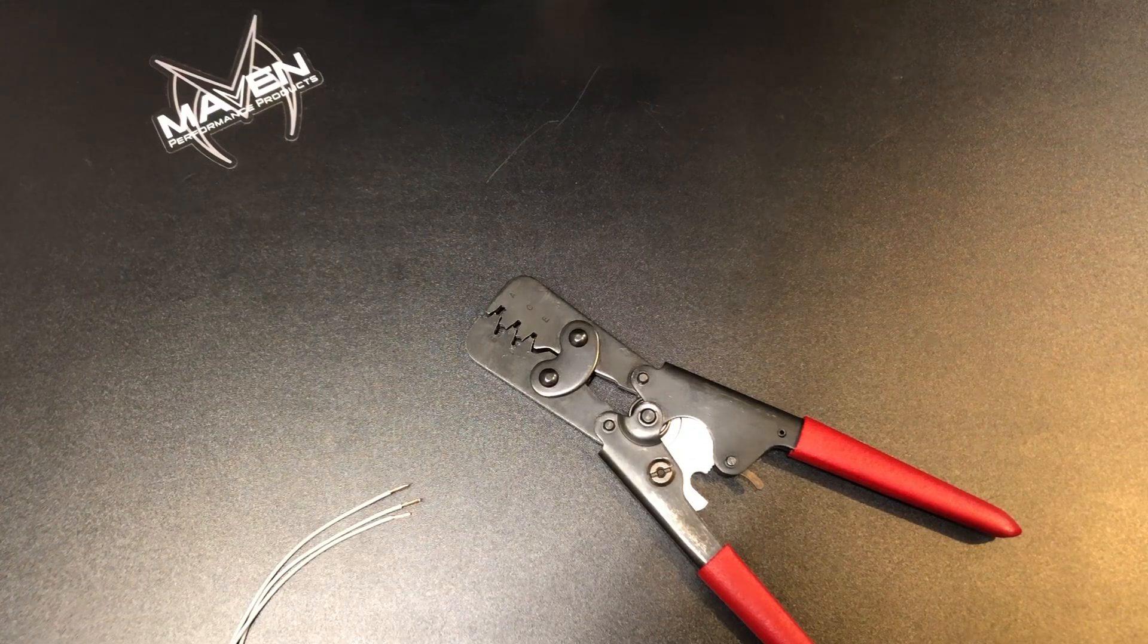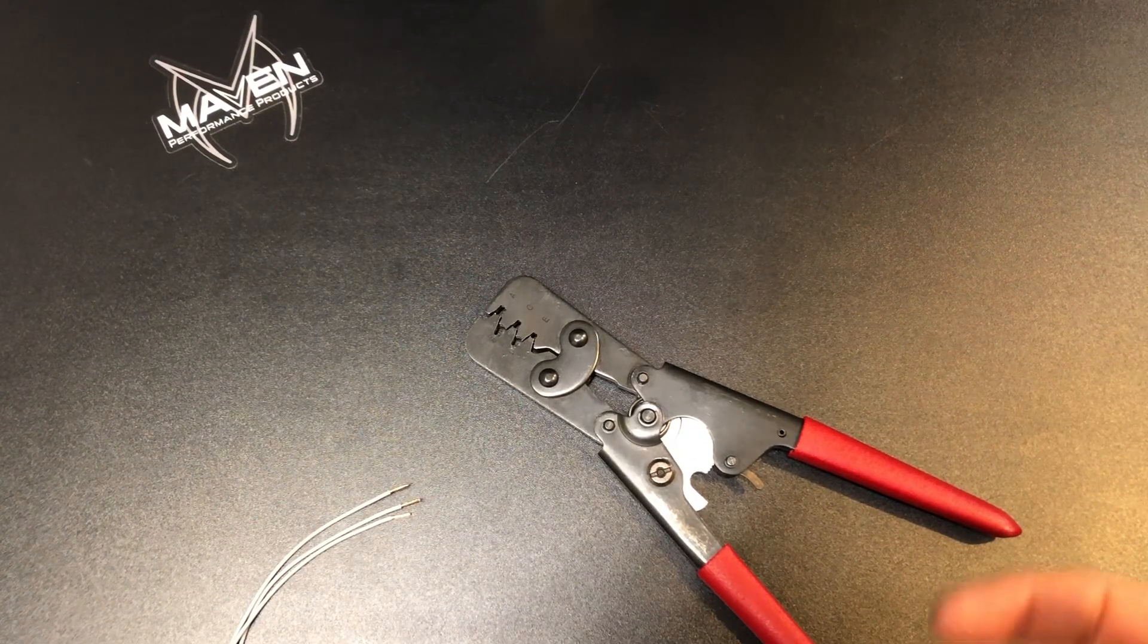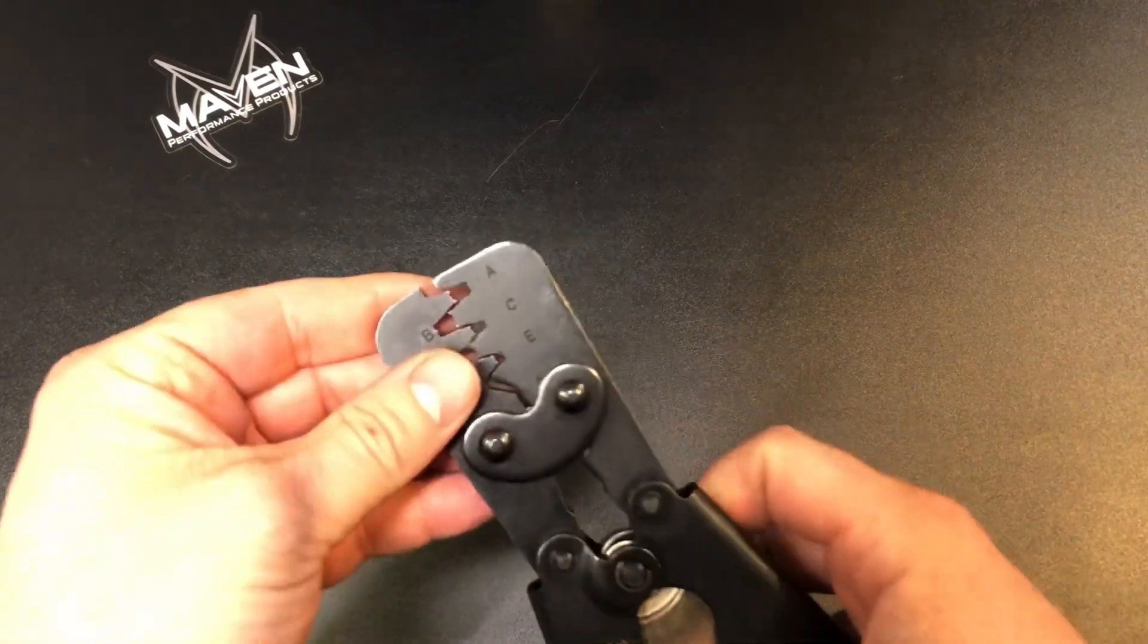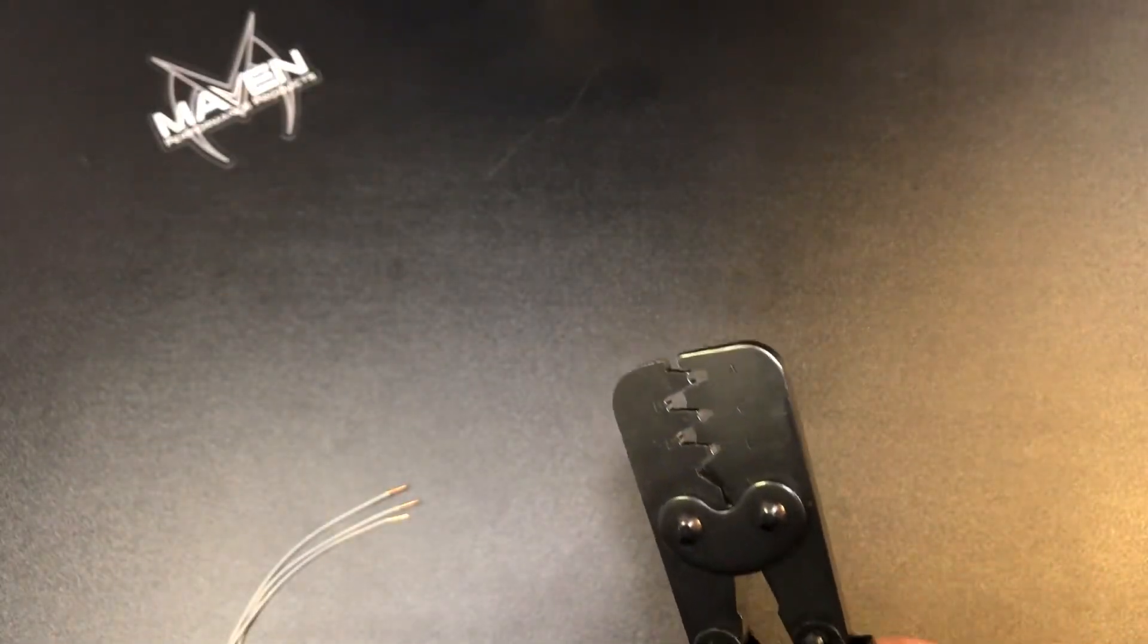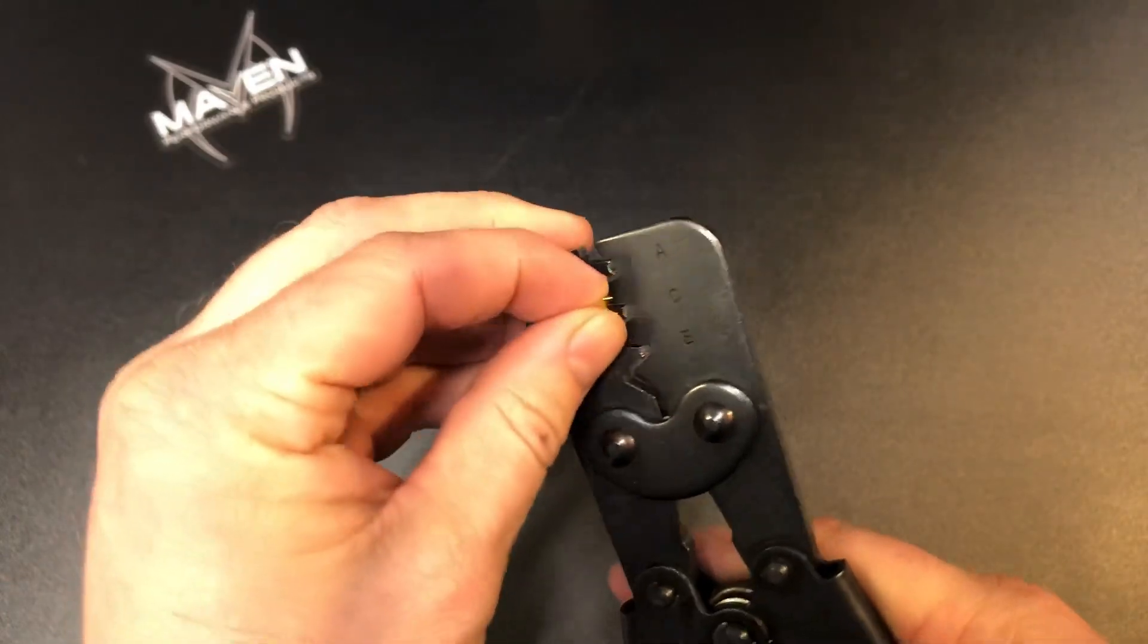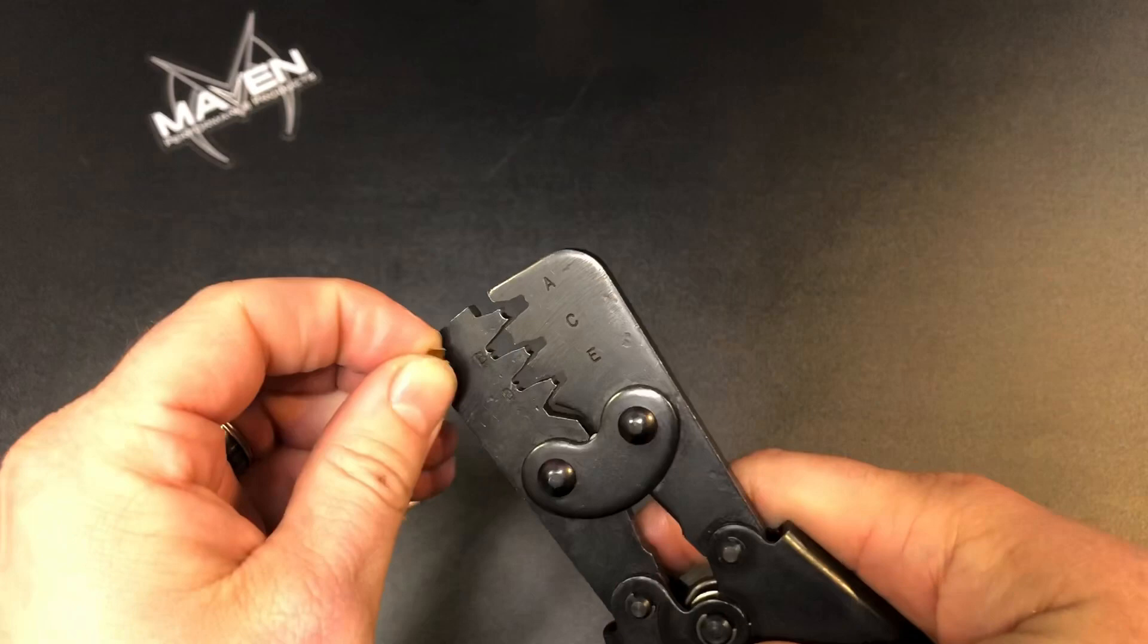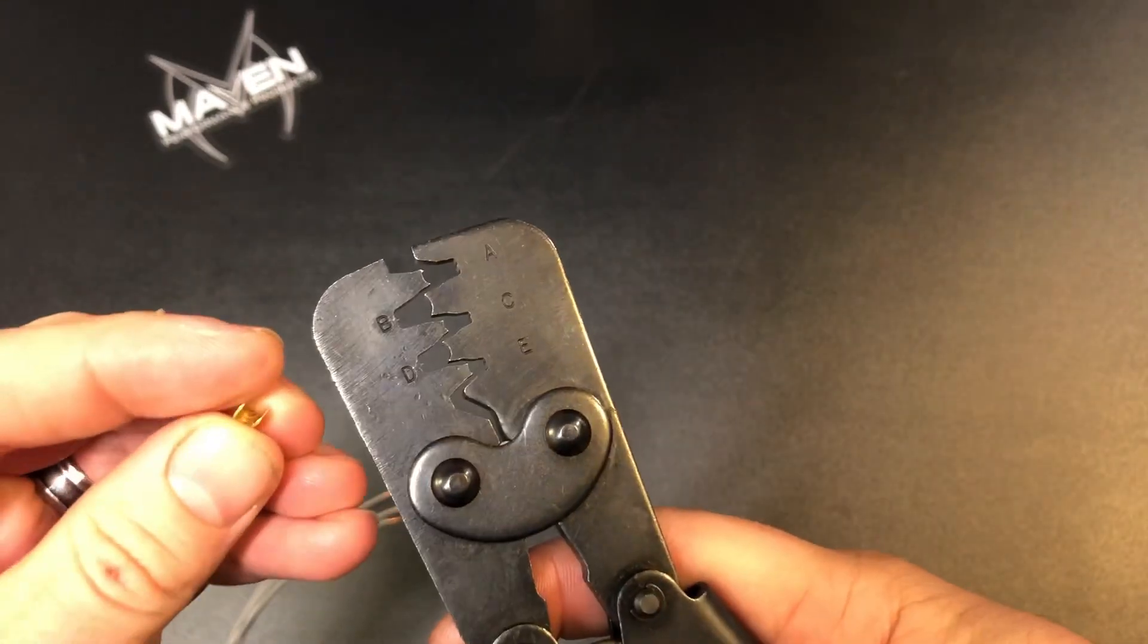What I'll say though is take some scrap pieces of wire. The little splice pieces aren't expensive. Whatever you're going to do, practice on them a couple times. Use a couple different ones. Make sure to give them a good crimp before you actually do it on your real harness.